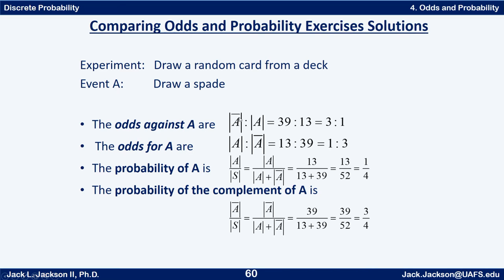The odds against A are the ways of not getting A to the ways of getting A. There are 39 cards that are not spades and 13 spades, so it's 39 to 13, which reduces to 3 to 1 — three cards that are not spades for every one card that is a spade. The odds for A would be 13 to 39, or 1 to 3 — one spade for every three non-spades. The probability of A is 13 over 52, or one-fourth. The probability of the complement of A is 39 over 52, or three-fourths. Notice one way to get 52 is to add the spades and the non-spades together.